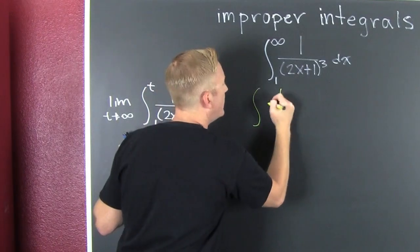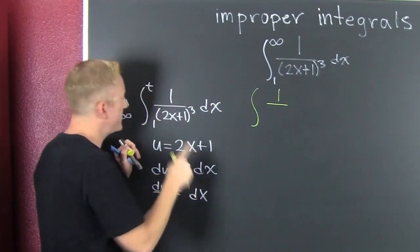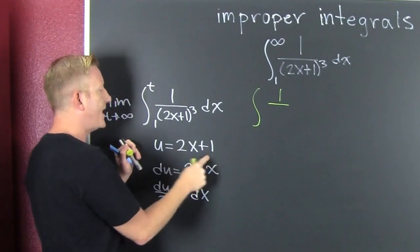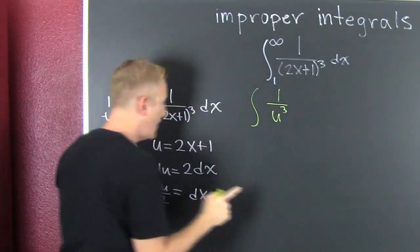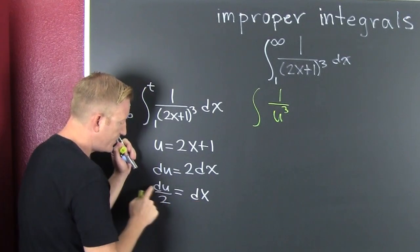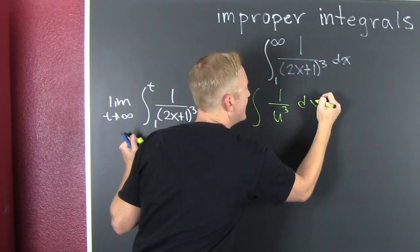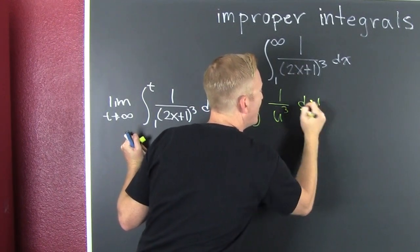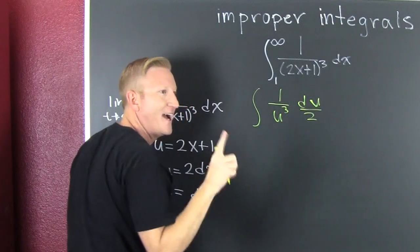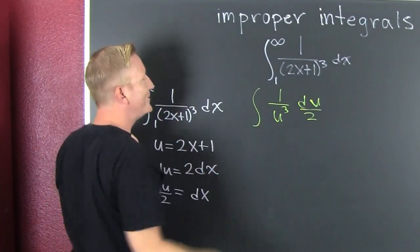And then we're going to say 1 over - we're going to back sub everything back in. My 2x plus 1, that's u to the third, and then I replace my dx with du over 2. I was thinking about how annoying that u could be.